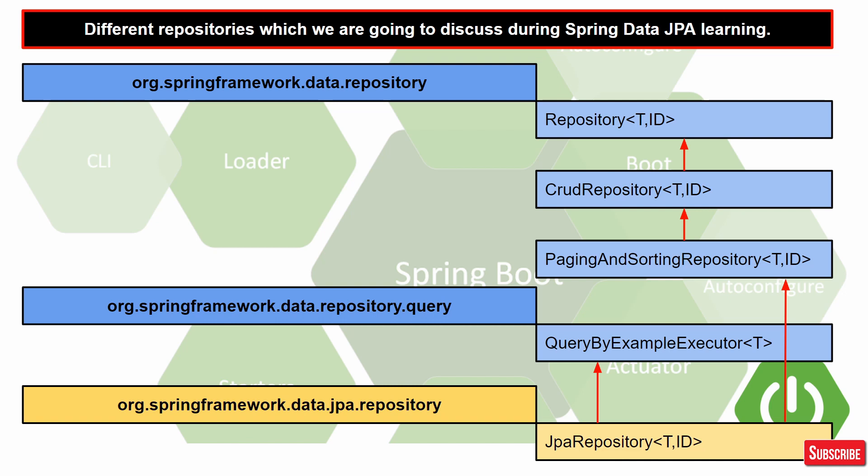CrudRepository does not have methods to deal with paging and sorting. So if you want paging and sorting, you use PagingAndSortingRepository, which extends CrudRepository. This means you get CRUD operations plus paging and sorting. If you want even more methods, JpaRepository extends CrudRepository, PagingAndSortingRepository, and QueryByExampleExecutor, along with some additional JPA-specific methods — so it's a vast repository with many methods.